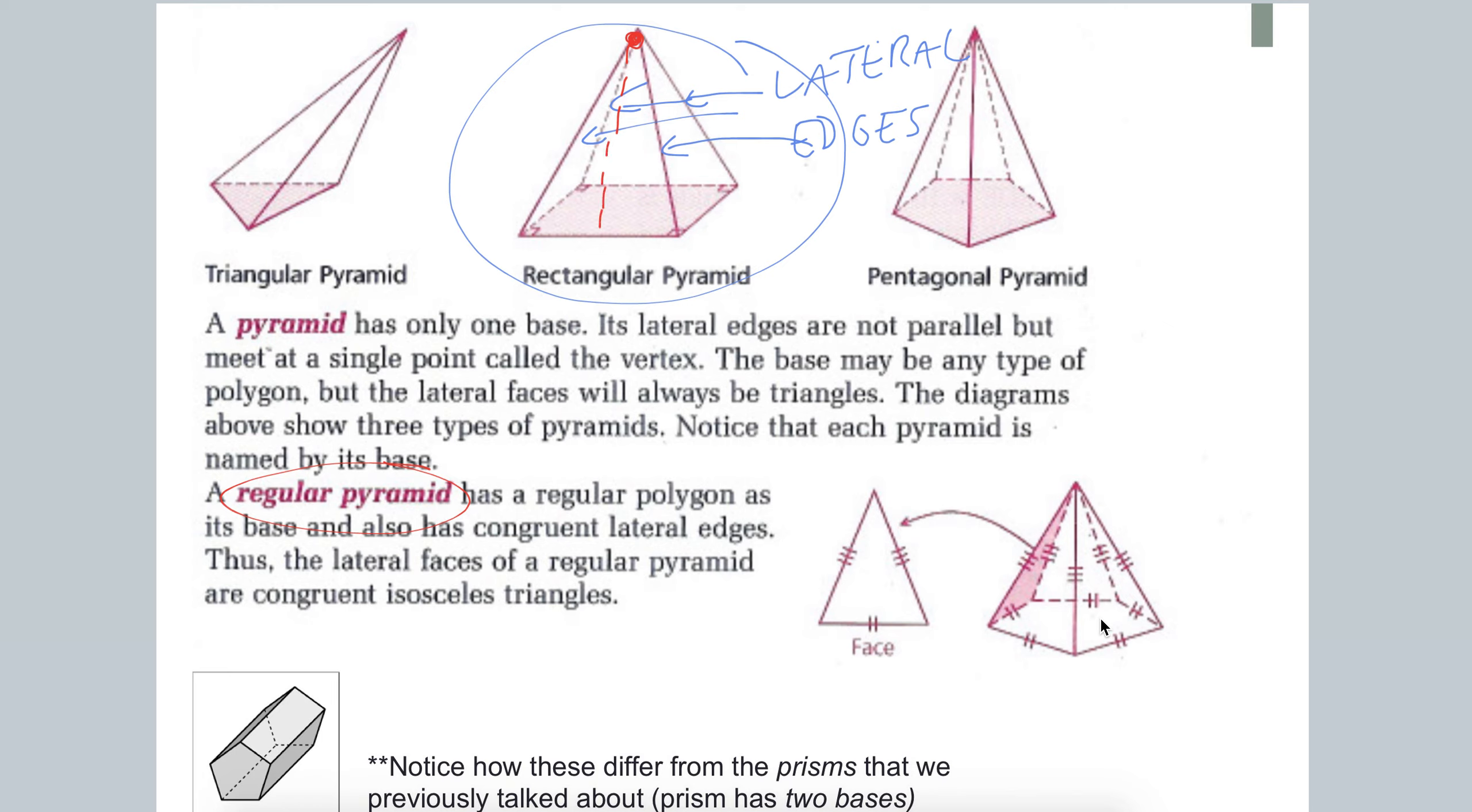perpendicular to one of the sides, we call that length the slant height. So we'll keep that in mind as we're talking about surface area.